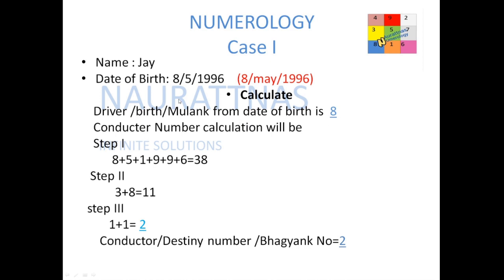Now we will calculate his conductor number by adding his full date of birth. We have to add 8 plus 5 plus 1 plus 9 plus 9 plus 6, which comes to 38. Now we add 3 plus 8 again, which comes to 11. Then we add 1 plus 1, that is 2. We keep adding until it comes to a single digit. So the conductor number is 2.